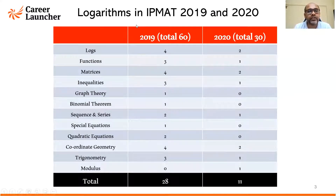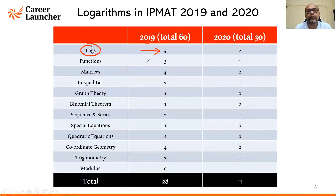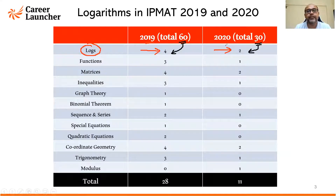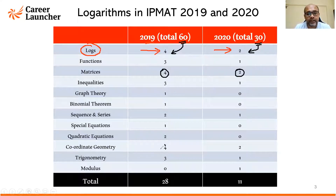Let's look at the appearance of Logarithms in IPMAT Indore's paper for the last two years. In 2019, the total number of questions were four, whereas in 2020 the total number of questions were two. Out of 60 questions you got four, and out of 30 you got two. So the ratio of Logarithms to the total maths questions has remained the same even when the paper was decreased. Logarithms is in fact one of the top three topics — the top three being Logarithms, matrices, and coordinate geometry.